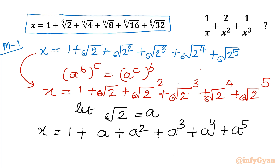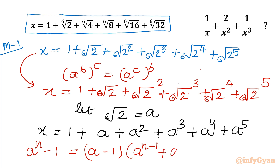Now I will use the algebraic expansion identity: a to the power n minus 1 can be written as (a minus 1) times (a to the power n minus 1 plus a to the power n minus 2 plus dot dot dot plus a plus 1). Once we multiply these two brackets, we are only left with a to the power n minus 1. So I will use this identity straight away.